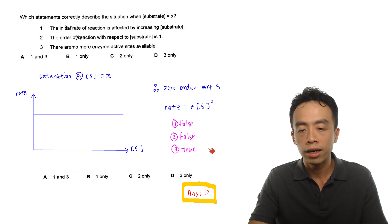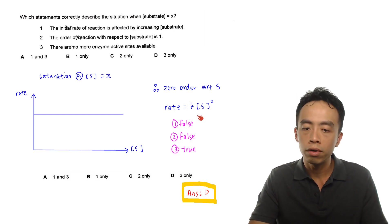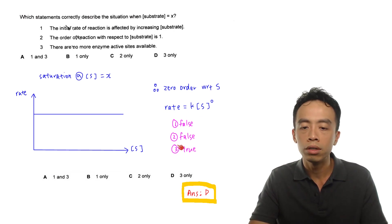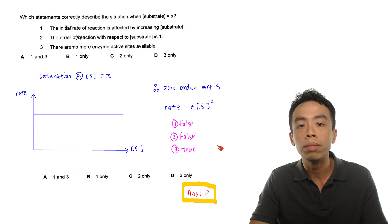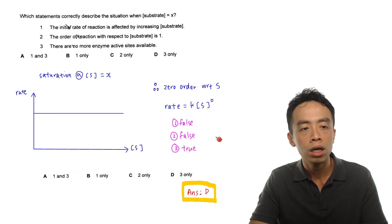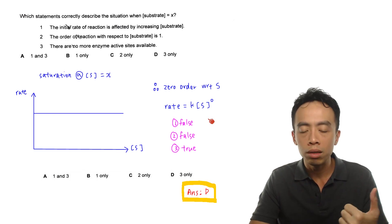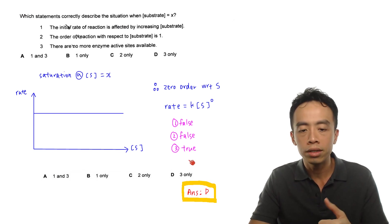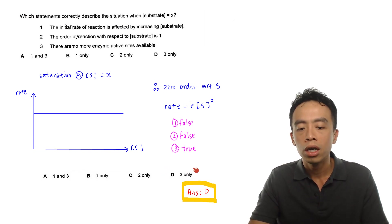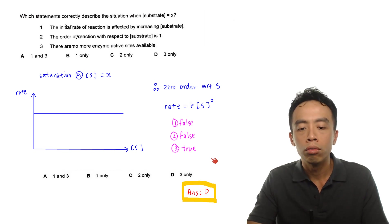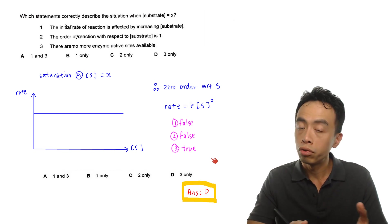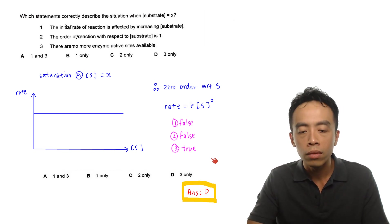Now that we have decided statement one is false, statement two is false, and statement three is true, we look back at our options A, B, C, D. In this case, we will choose option D, where only statement three is correct. The answer to this question is option D.